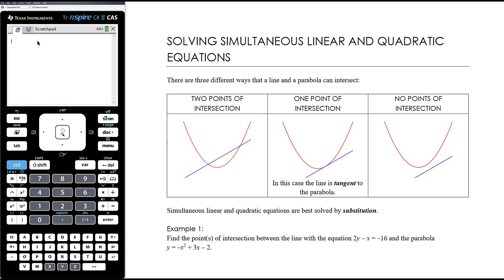In this video we want to look at solving simultaneous linear and quadratic equations. The premise is relatively straightforward, but we can get into some quite complex algebra. Graphically, what we're doing is finding where a straight line intersects with a parabola, and there are three possibilities of what could happen.